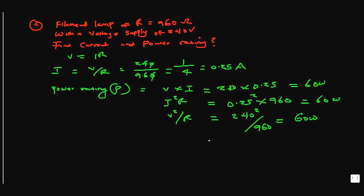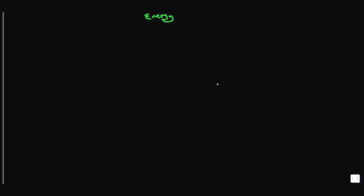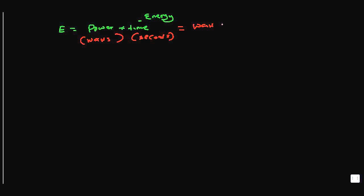Now we're going to talk about electrical energy. The symbol for energy is E, and that is power times time. The unit for power is watts and the unit for time is seconds, so the unit for energy is watt-second.